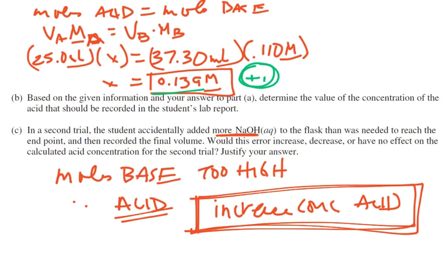And what's your justification? Okay, because since you're using, so your volume is too large, then your calculated moles of your base is too high. So therefore, the calculated moles of your acid is going to be too high, and you're going to get your concentration of your acid, your calculated concentration is going to increase because of that error.